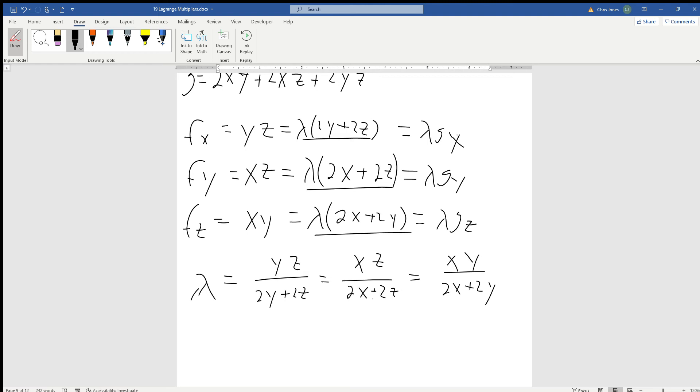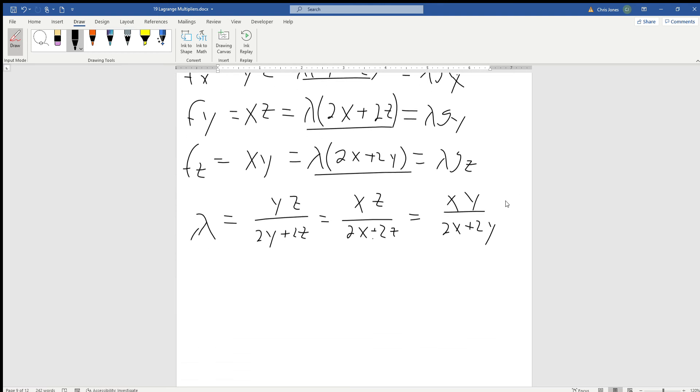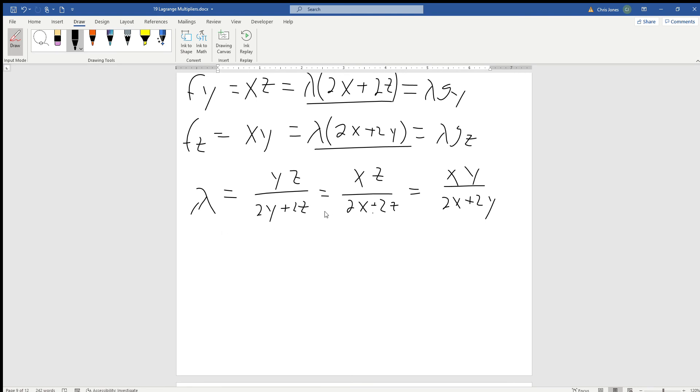Now even though all the denominators have a factor of 2 in it, so we could divide everything by 2, or actually multiply everything by 2, let's just focus on maybe two of the equations. It doesn't really matter which one. Let's just focus on this animal right here, those two. So we can see xz divided by 2x, or we could just go ahead and multiply by 2, and we could just say xz over x + z is equal to xy over x + y.